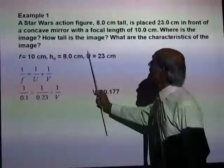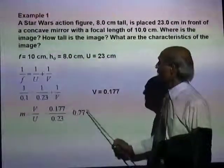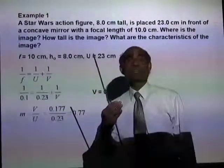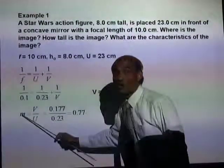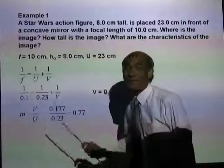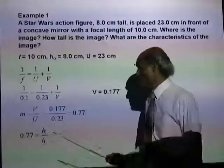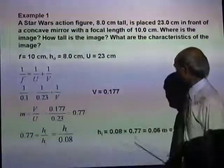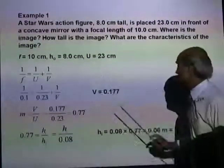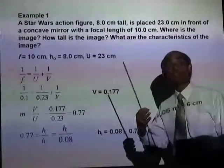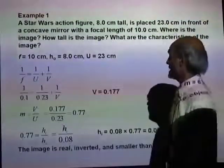Once you know V and U, you can calculate magnification: M = V/U = 0.77. The size of the image is smaller than the object. Magnification also equals H_I / H_O, so 0.77 = H_I / H_O. Therefore H_I = 0.06 m or 6 cm. The height of the object is 8 cm and the height of the image is 6 cm — the image is diminished. In this case the image is a real image, formed by the actual intersection of the light rays.